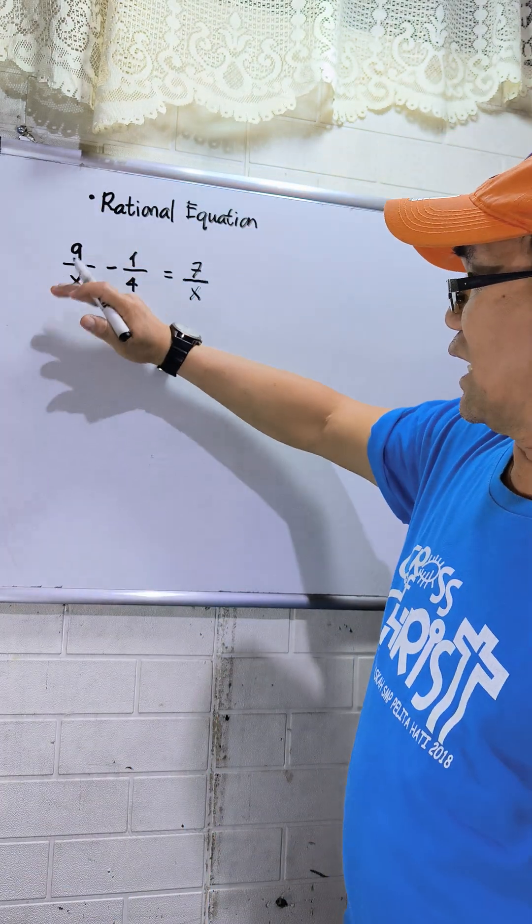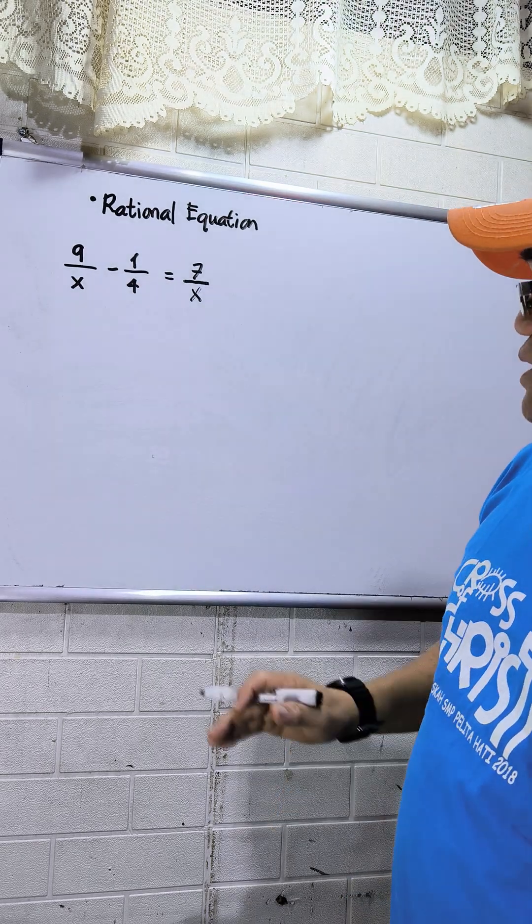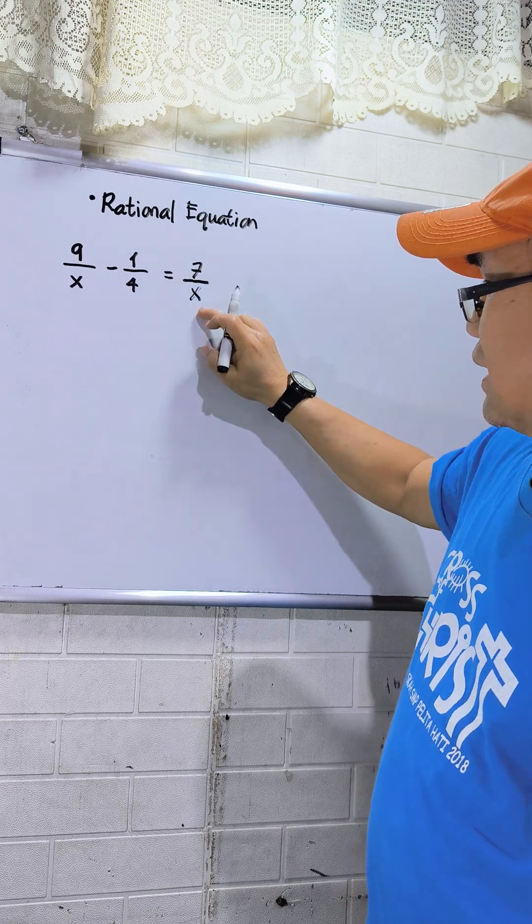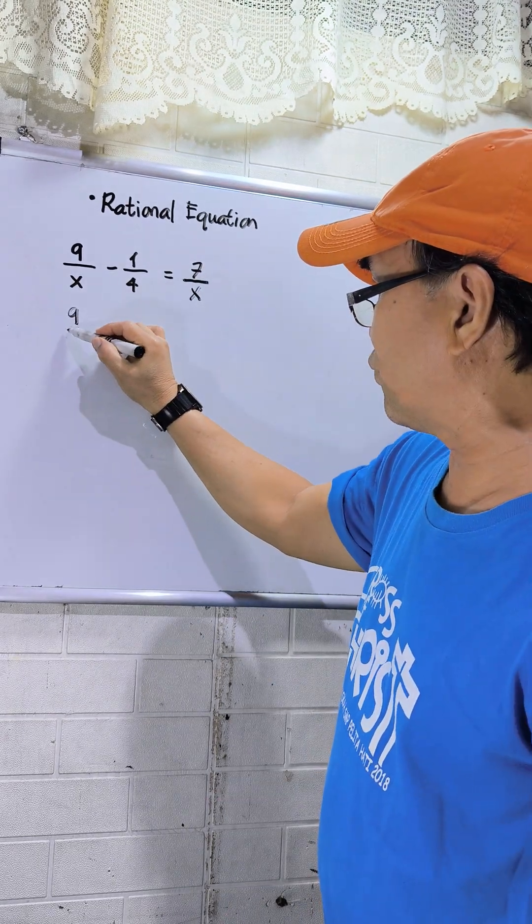So I have here 9 over x minus 1 over 4 equals 7 over x. Since 7 over x has a variable, I will place this one at the left side. So this will be 9 over x.